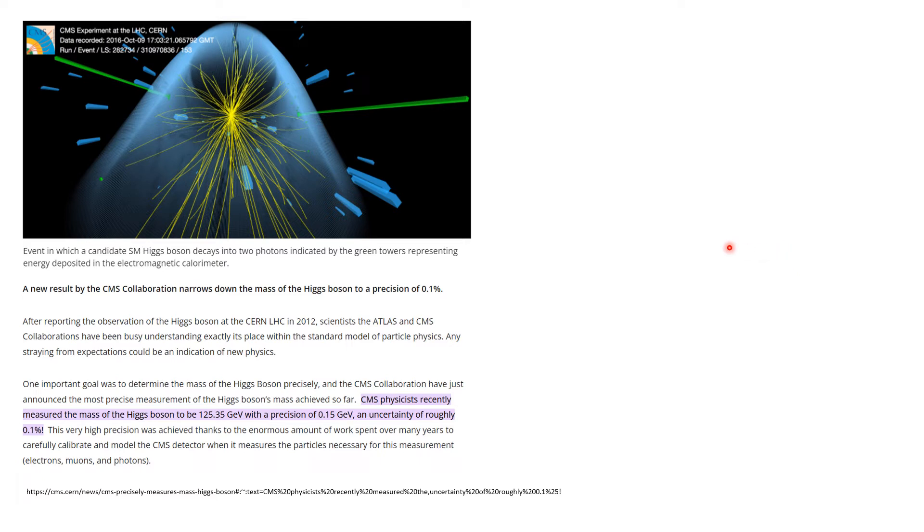when the Higgs boson was found, it ended up weighing about 125 GeV. Scientists have been working to narrow that mass down more and more accurately.